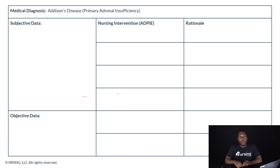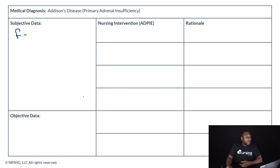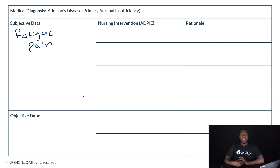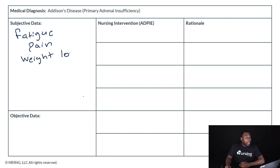When these patients come in to see you, they are going to have a list of complaints. Some of the subjective things they're going to report: they will complain about being fatigued or tired. They're also going to complain of pain — lower back pain, leg pain, abdominal pain. They are going to be irritable, they will complain of being depressed, and they will report significant weight loss. These patients are going to be thin.